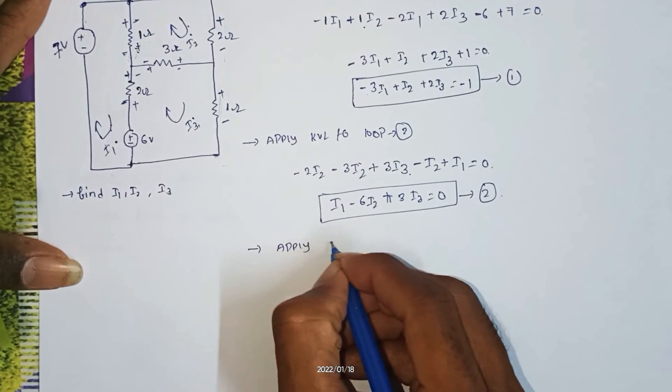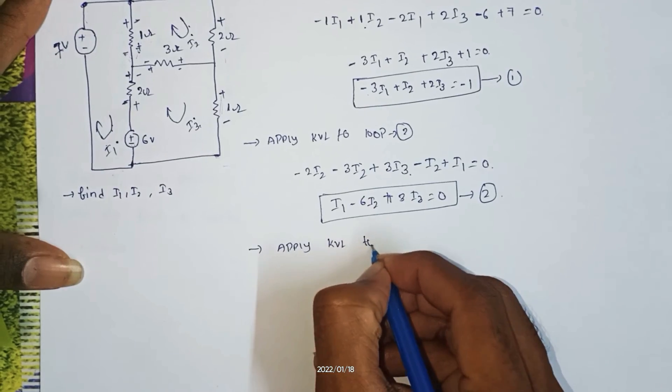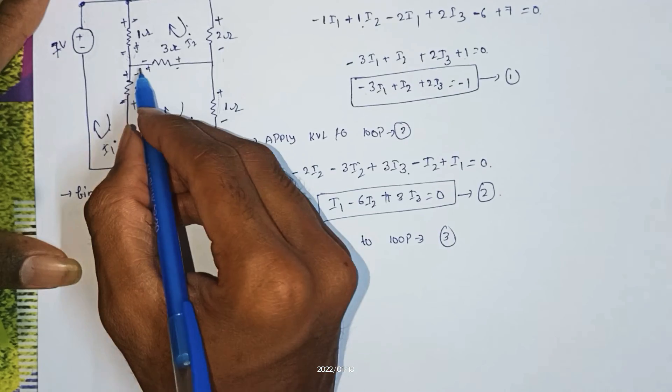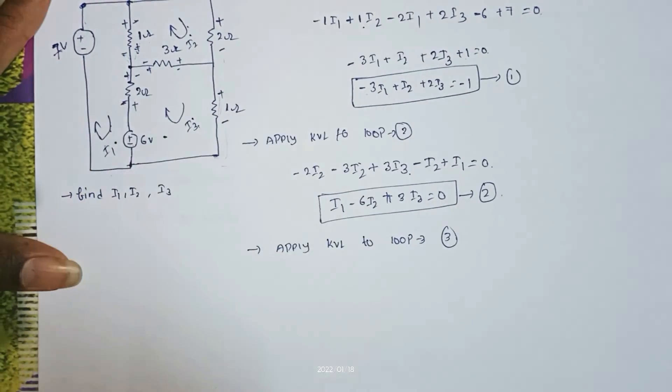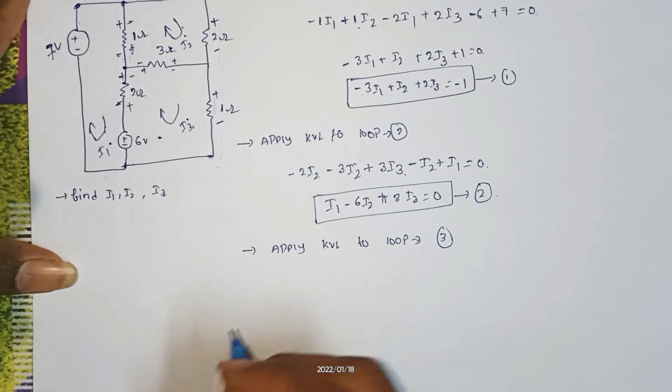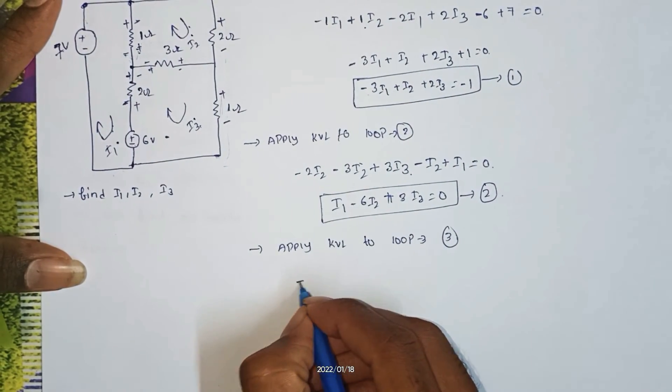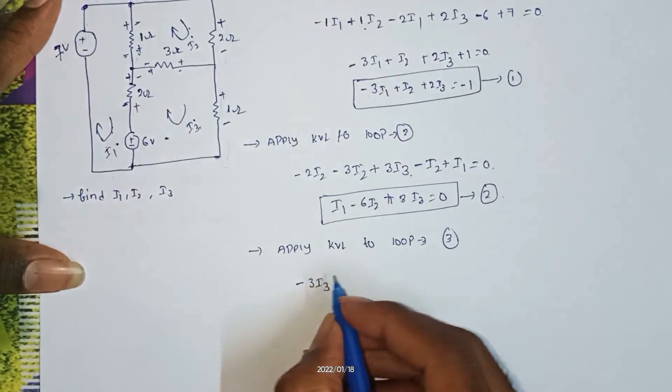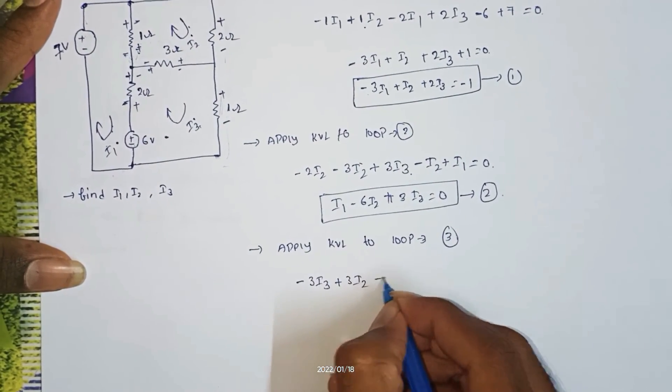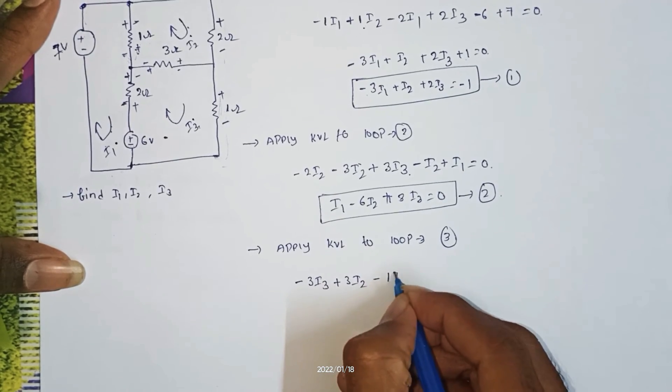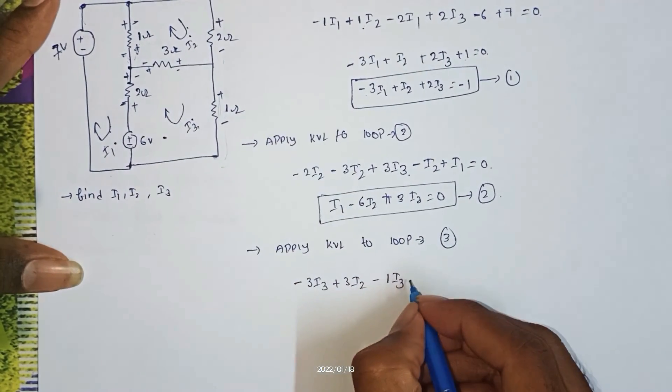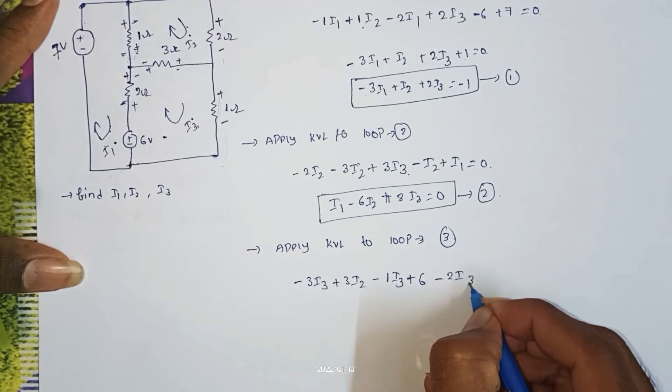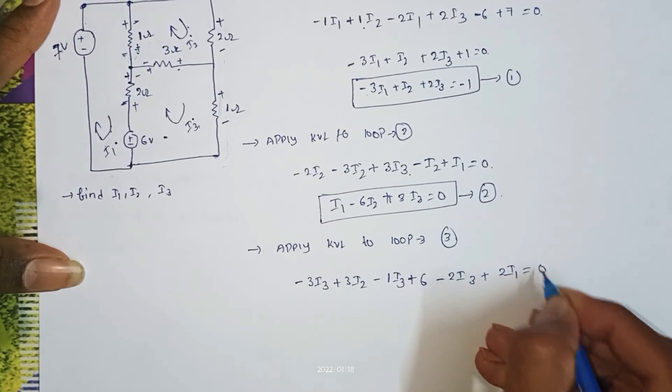Next, apply KVL to loop 3. This is loop 3. First minus 3 I3, next plus 3 I2 minus 1 I3.